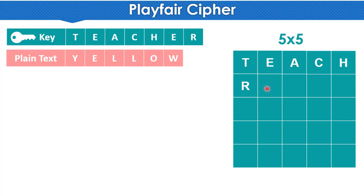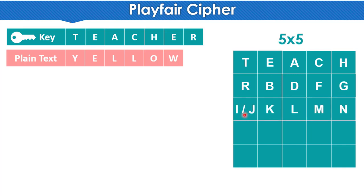B comes next, then C should come but C is already written, so D comes. Then E should come but E is already written, so F comes. Then G comes, then I comes, then J, K, L, M, N. The rule is that alphabets do not repeat inside the 25 blocks, and all remaining alphabets of the alphabet fill the table.